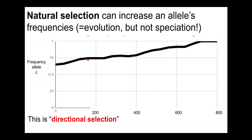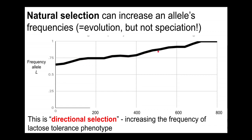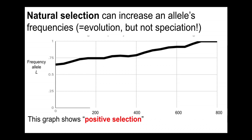Natural selection is just one kind of evolution. We would call this directional selection — we're increasing consistently in a direction, increasing the frequency of the big L allele, increasing the frequency of homozygous dominant individuals, and increasing the frequency of lactose tolerance in the population. Another term you'll hear is positive selection — it's selection for the big L allele.